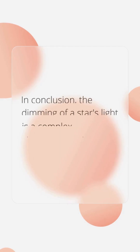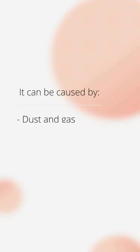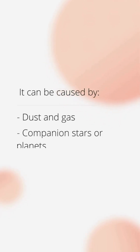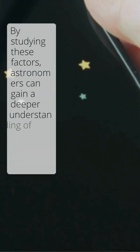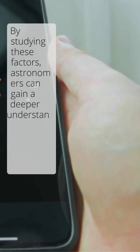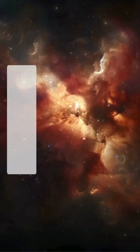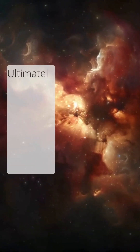In conclusion, the dimming of a star's light is a complex phenomenon that can be caused by a variety of factors, including dust and gas, companion stars or planets, changes in the star itself, and even exotic forms of matter. By studying these factors, astronomers can gain a deeper understanding of the universe and the behavior of celestial objects, ultimately shedding more light on the mysteries of the cosmos.